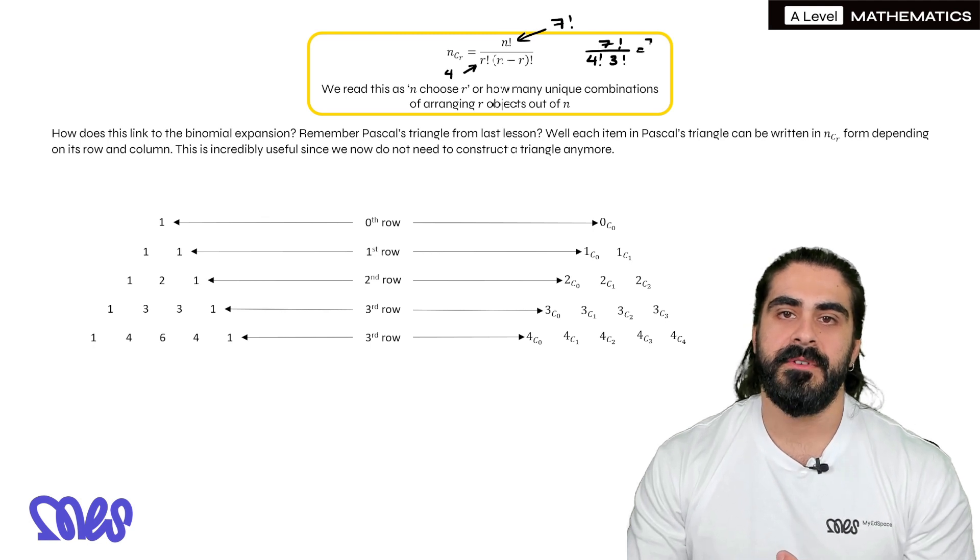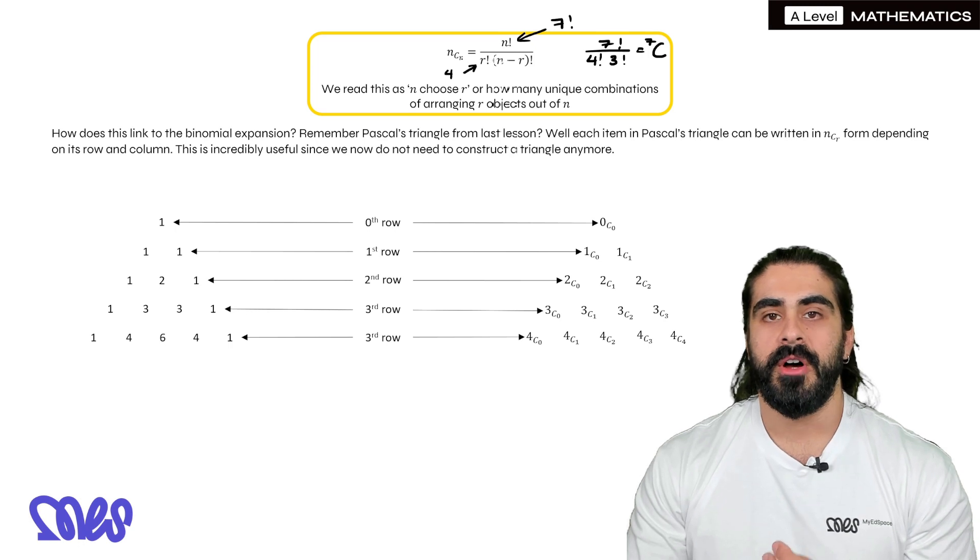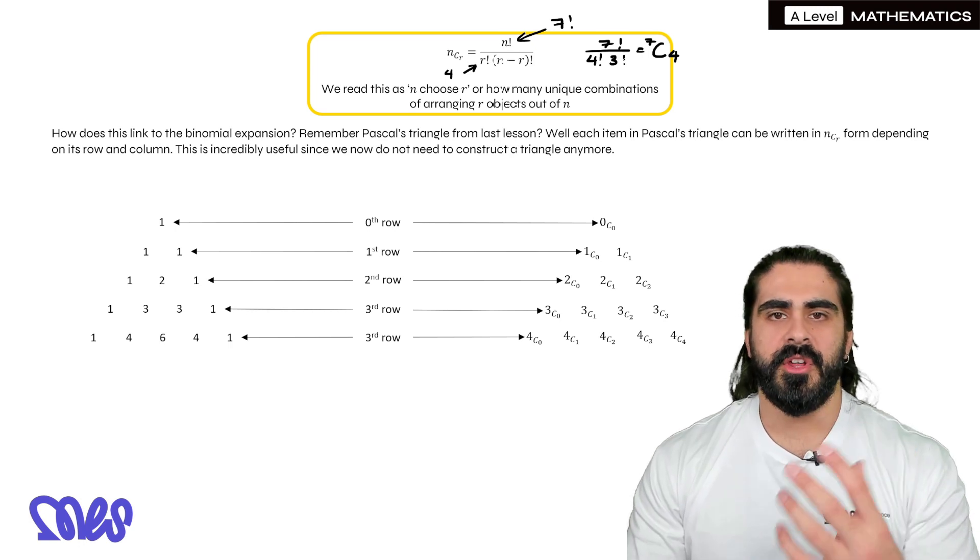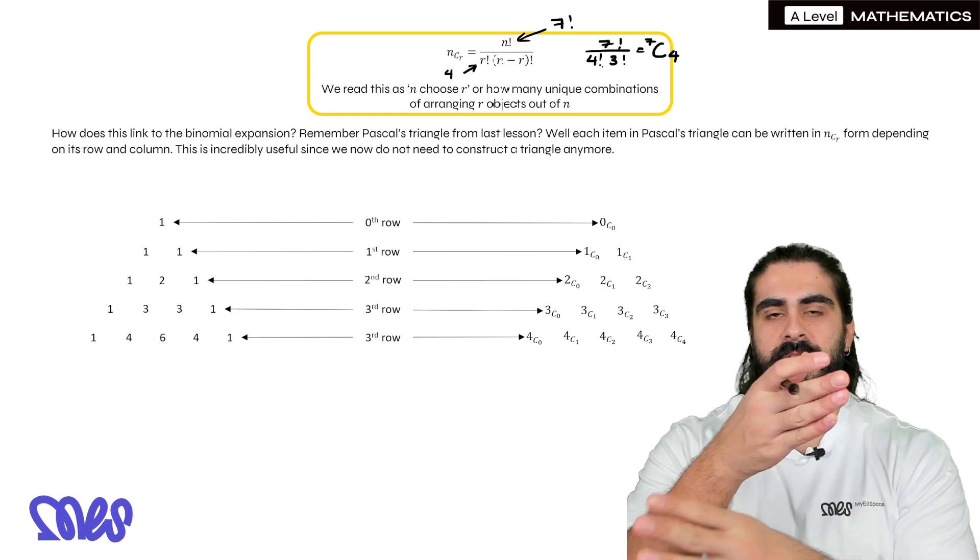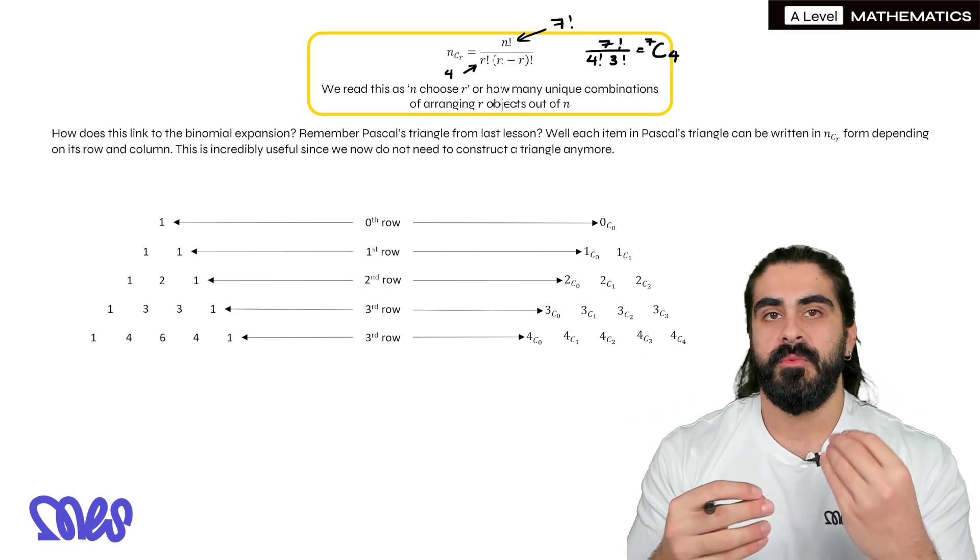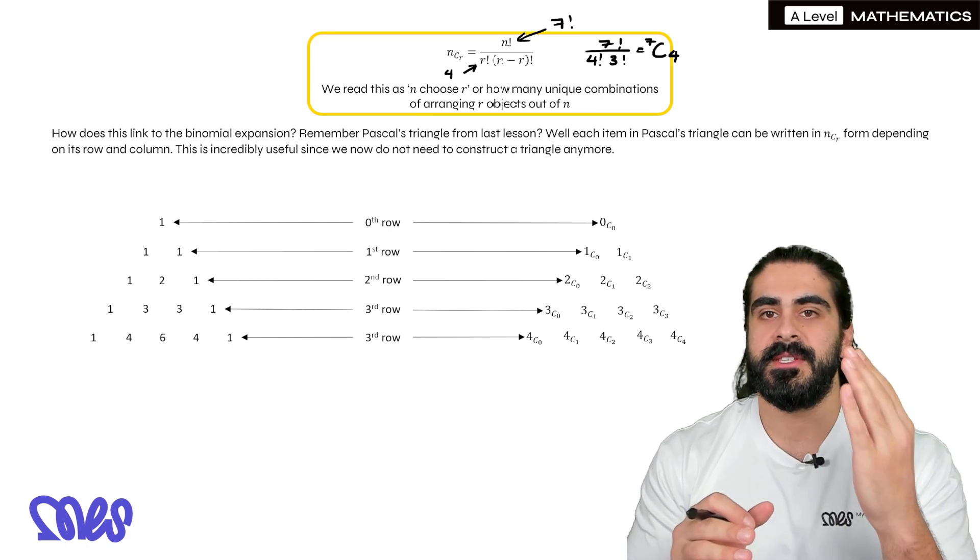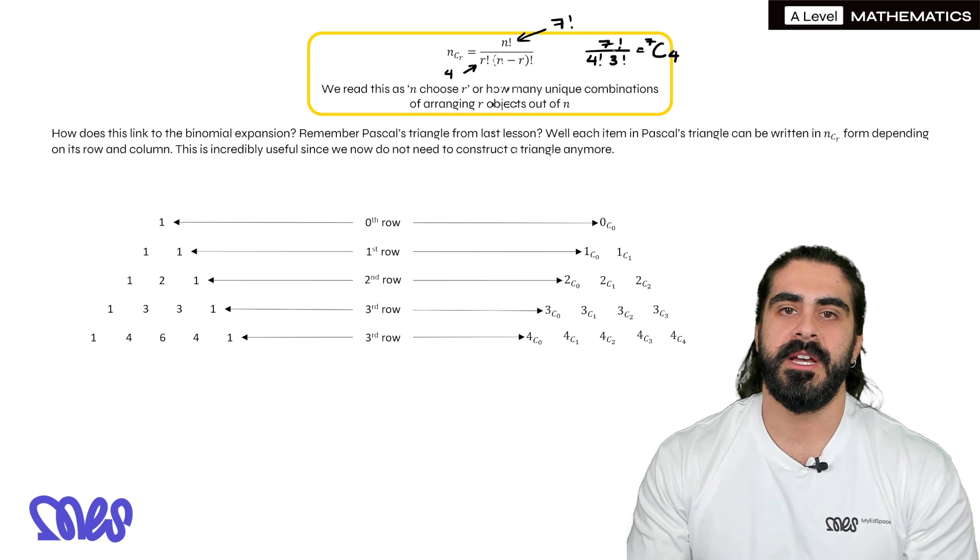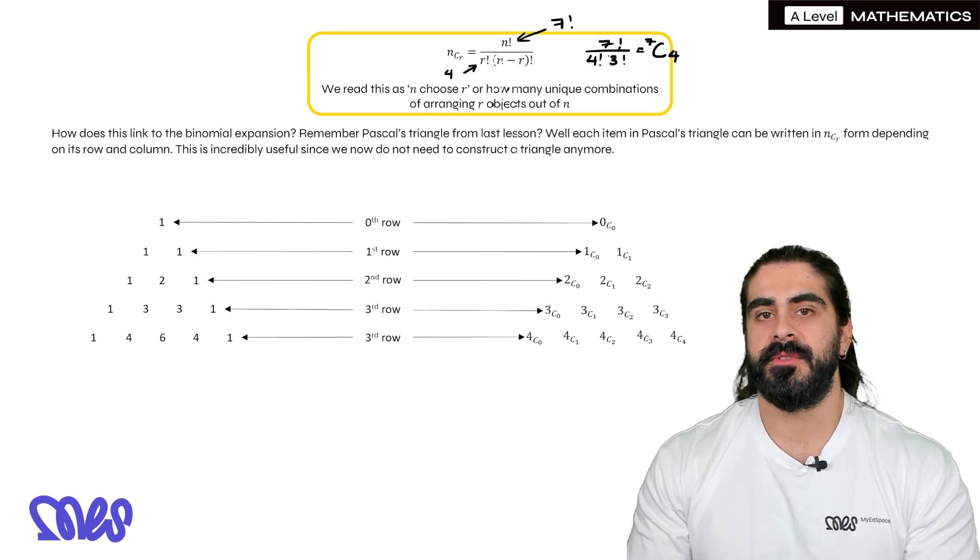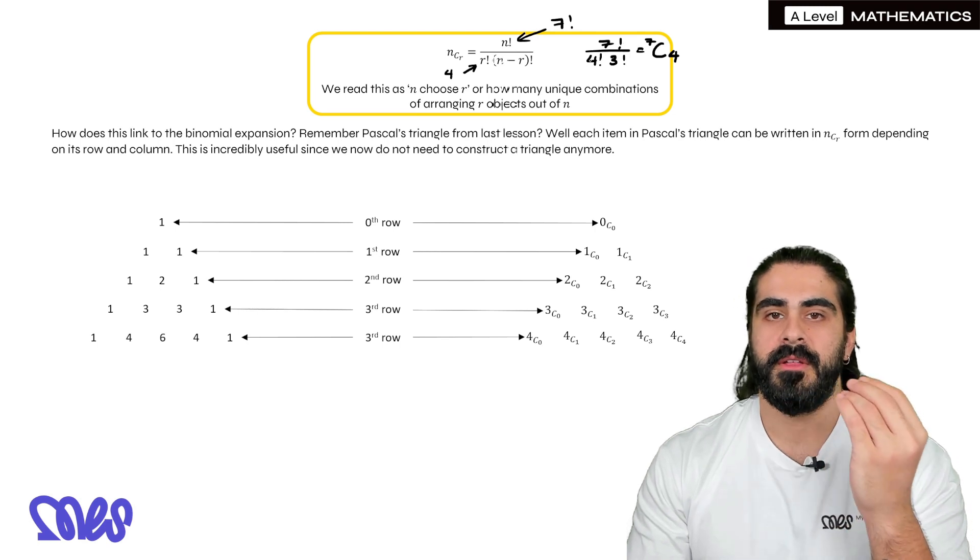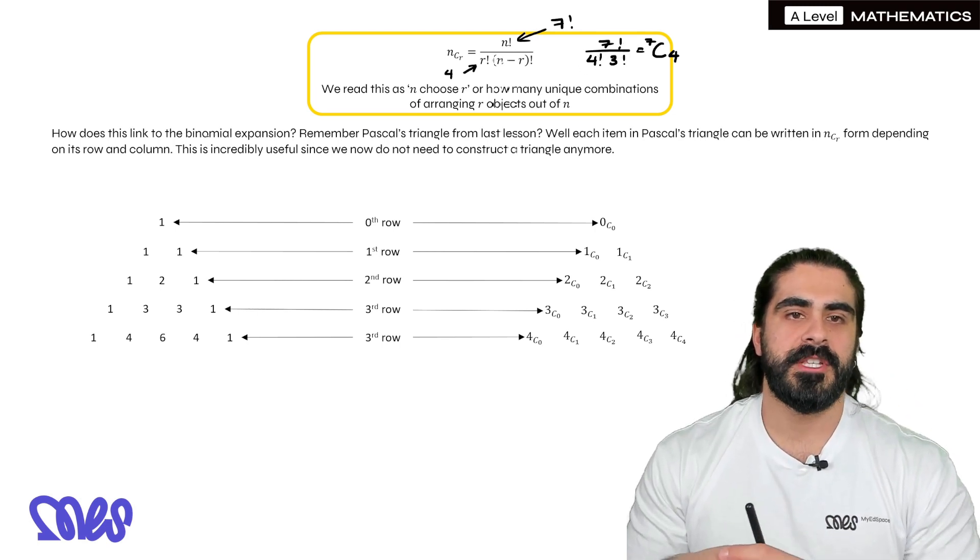Now in terms of n choose r, n in this case is seven, we have seven objects, choose r is four. Now just another note, four factorial and three factorial, because it's multiplication, the three and the four could have been written the other way, which is actually another point I'll describe a bit later, is seven choose four is actually the same as seven choose three. Because I could have written seven factorial over four factorial three factorial, seven factorial over three factorial four factorial.